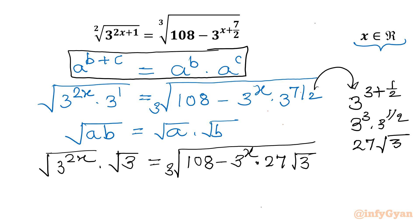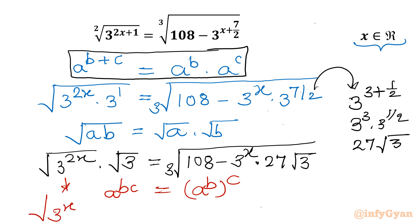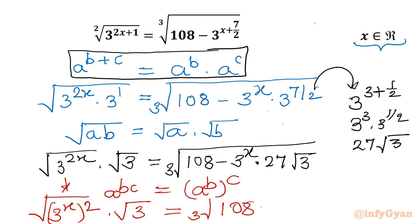In the LHS I will use another property of exponents: a power b times c, we can write as a power b, whole raised to power c. So here I can write square root of 3 power x, whole squared, times root 3, equal to cube root of 108 minus 27 root 3 times 3 power x.